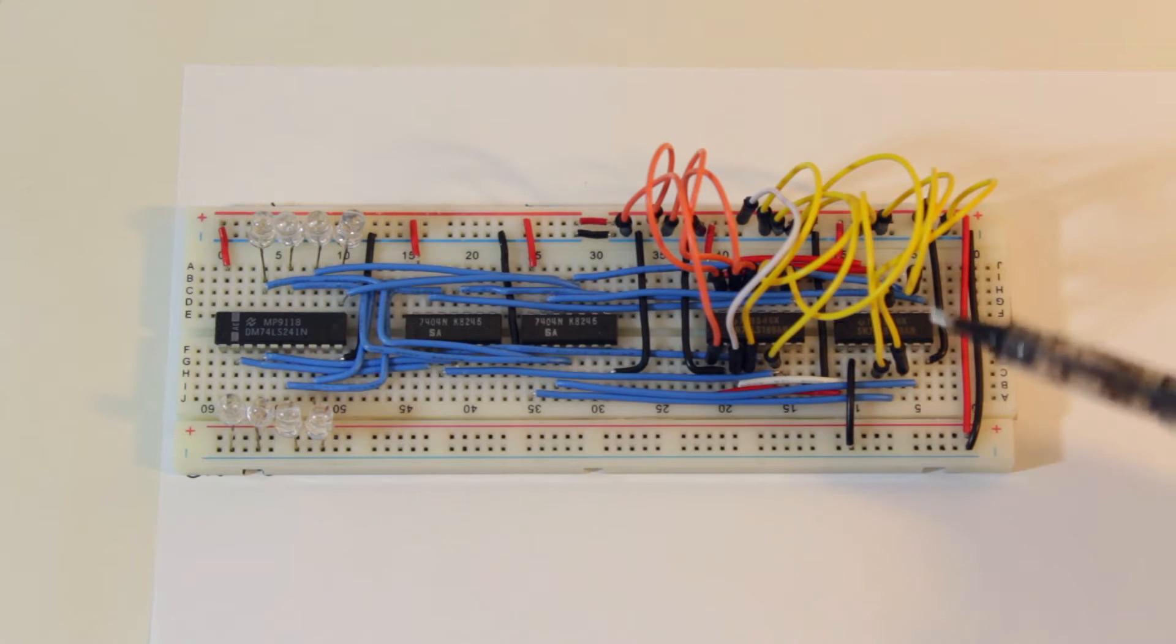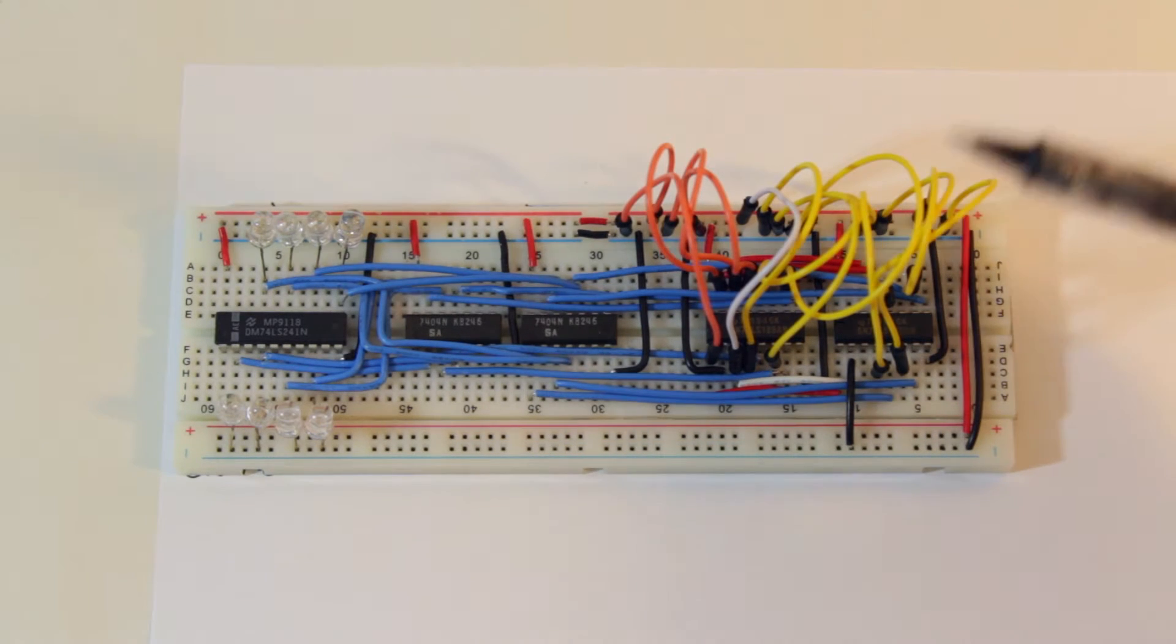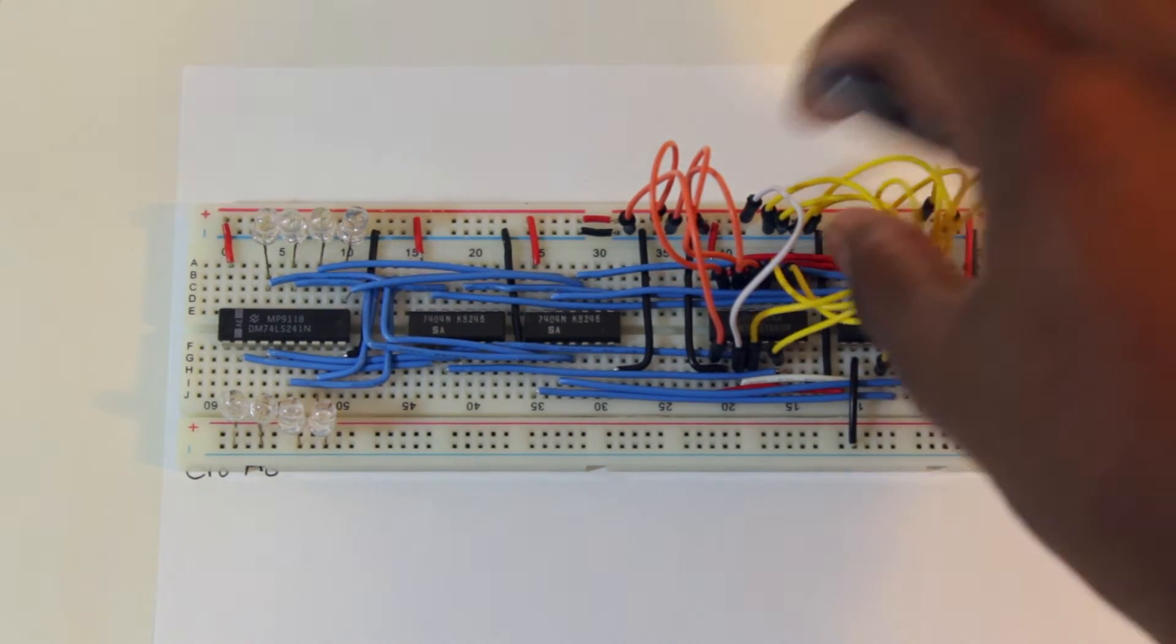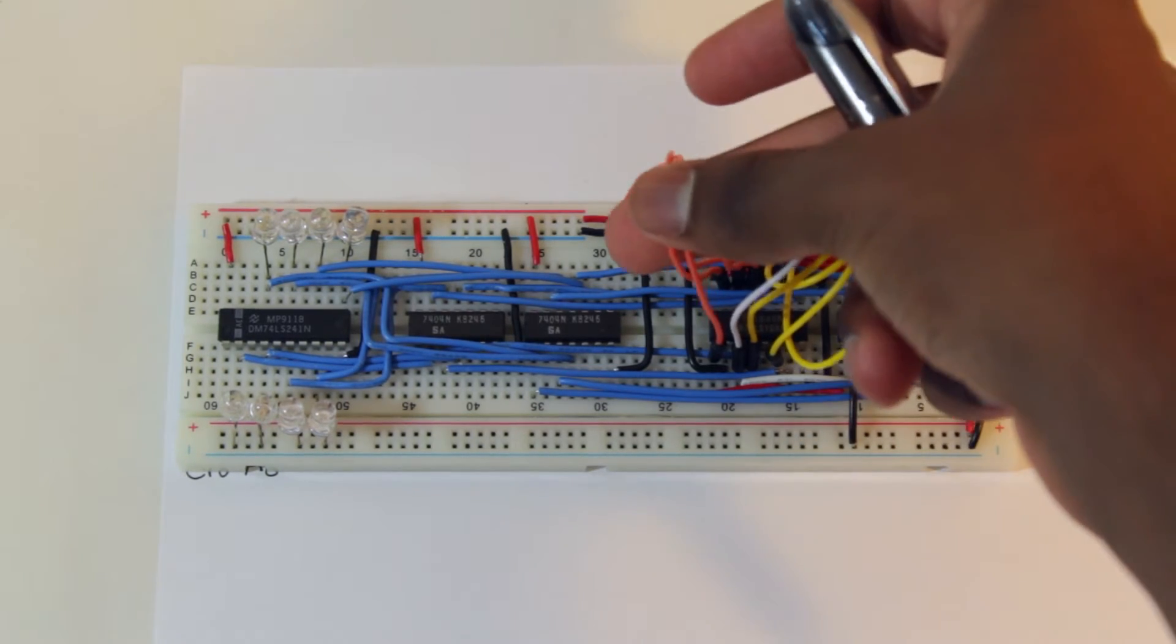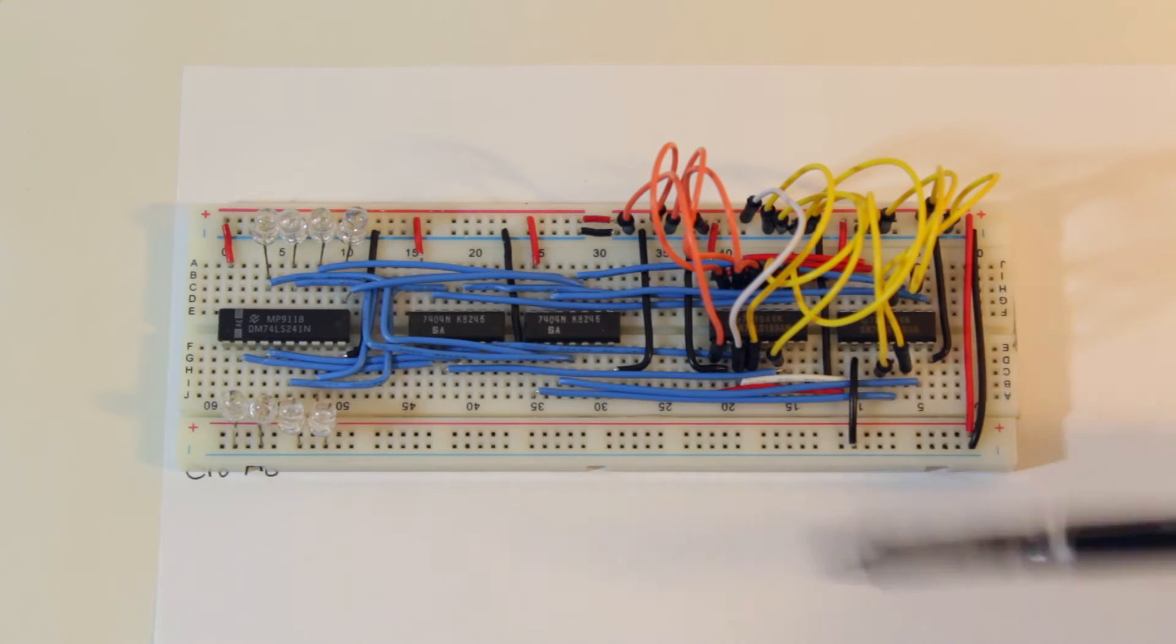Hey guys, Akil Mohadeen here and welcome back to another video. In the last video we made this 64 bit or 128 bit RAM module and there was one problem with it. I mean it worked perfectly and all, just the problem was that these yellow wires were how we inputted data, this white wire was how we said we wanted to write, and these four orange lines was how we inputted the address. If you don't know what any of that means, then go ahead and watch the last video.